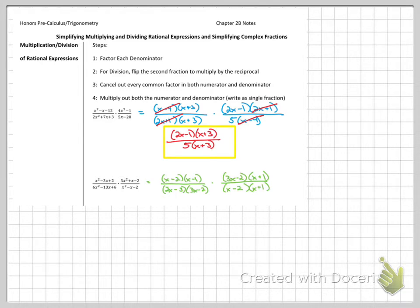Okay, then once we get everything factored out, matching factors on top and bottom, whole factors. Minus 2, minus 2. 3x minus 2, 3x minus 2. x plus 1, x plus 1. Everybody who's left over gets written down.